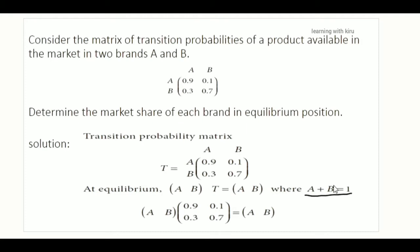Next, T is the matrix. We have to do the matrix multiplication — this row and column. We have to do A equal to A. So we compute: A into 0.9 gives 0.9A, and B into 0.3 gives 0.3B.